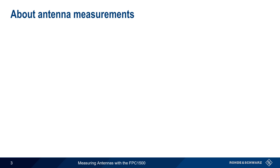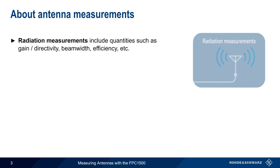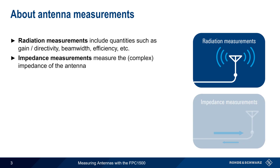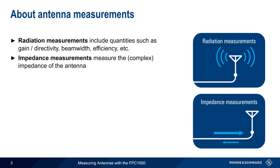There are actually two types of antenna measurements. One type is a radiation measurement, which describes how well the antenna radiates a signal. This includes the antenna's gain and directivity, beam width efficiency, etc. However, in this presentation, we'll be looking at the other type, which is antenna impedance measurements.